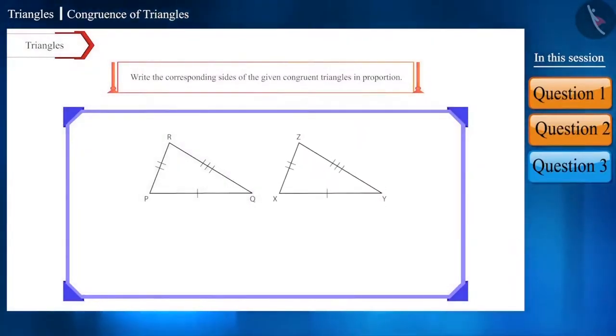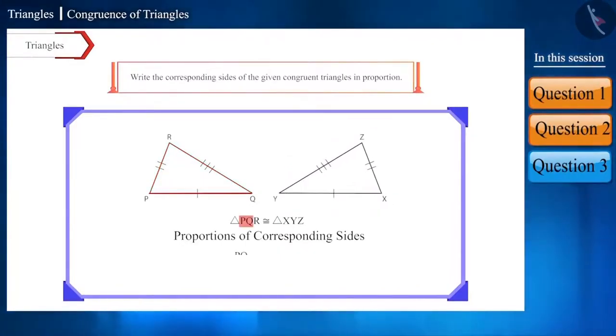we will write the names of the two triangles in the same order in congruent form and then we will write the proportions of their corresponding sides in the same order. According to the figure, triangle PQR is congruent to triangle XYZ. And now the proportions of their corresponding sides will be like this. Side PQ corresponds to side XY, side QR corresponds to side YZ and side PR corresponds to side XZ.